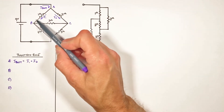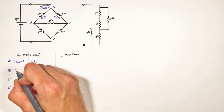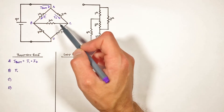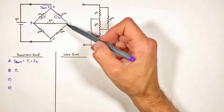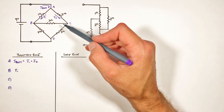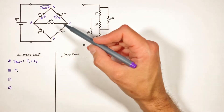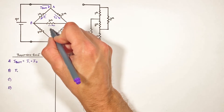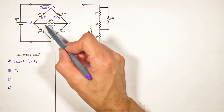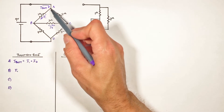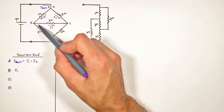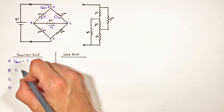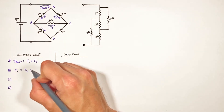Looking at junction B, we know current I1 is coming in through the 1 ohm resistor. The question is whether current through the 3 ohm resistor is coming into or out of B — that depends on the resistor values, so we have to guess. I'll guess that current I3 through the 3 ohm resistor flows to the right, meaning it exits junction B. So: I1 = I3 + I4, where I4 is the current through the 4 ohm resistor also leaving B.